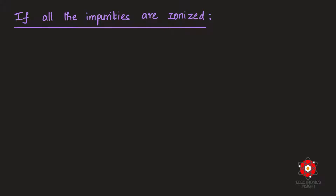The second part asks us to find the acceptor density, given the donor density Nd = 10¹² per cm³ and that all impurities are ionized. This means both donor and acceptor impurities are present, undergoing charge compensation.